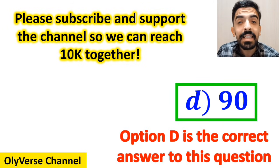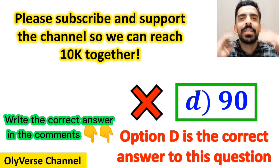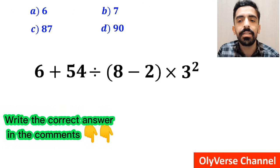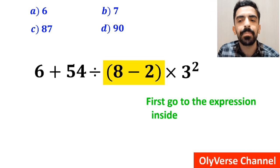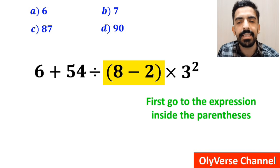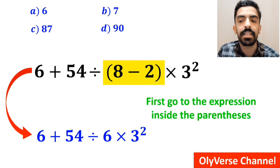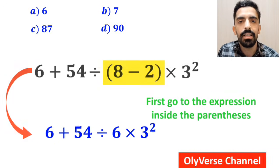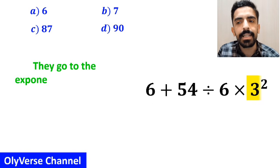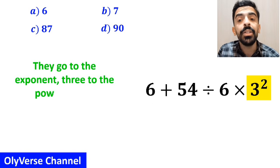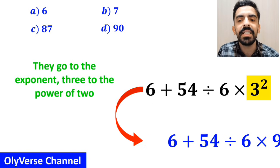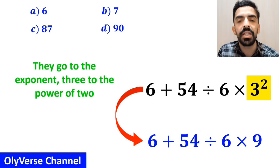Also, some other people when solving this question first go to the expression inside the parenthesis, and instead write 6 plus 54 divided by 6 times 3 to the power of 2. In the next step, they go to the exponent 3 to the power of 2, and simplify this expression to 6 plus 54 divided by 6 times 9.